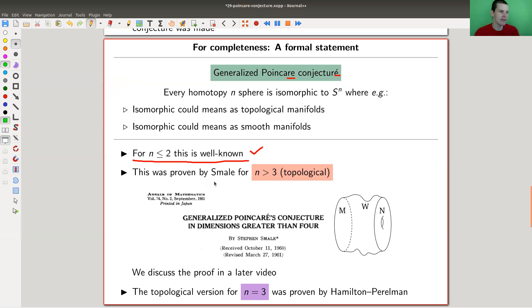The fun thing is that Smale, much earlier than Perelman, proved this generalized Poincaré conjecture, which looks much harder because it's higher dimensional, than the three-dimensional one.